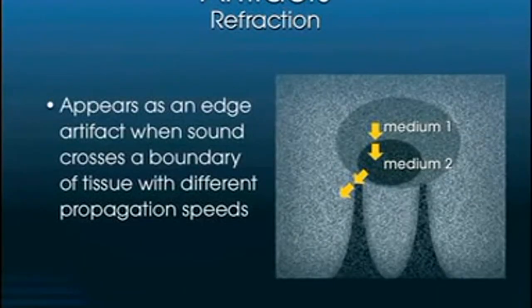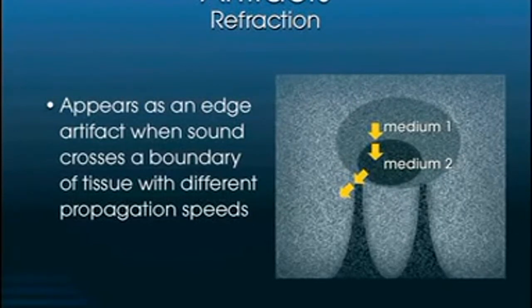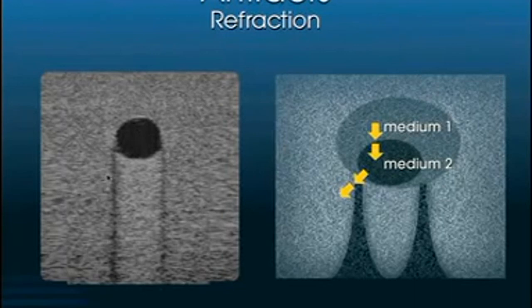Refraction is another artifact. When sound passes through two different media, it gets redirected or refracted, producing a shadow along the edges of that second medium. This is similar to the bending of a pencil in a glass of water, as described by Snell's Law. The sound changes speed as it enters the second medium, gets refracted, and lateral shadows appear along the edges of the different medium.